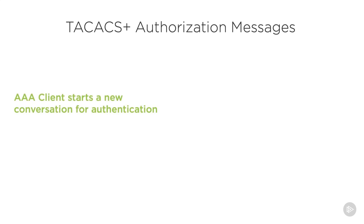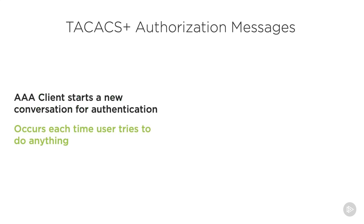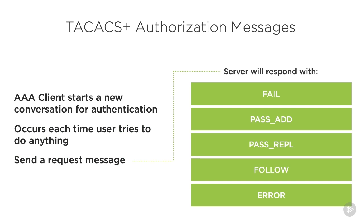Once authenticated, the AAA client starts a new conversation for authorization. This is useful because the AAA client can ask for authorization for everything the user is trying to do. For example, if TACACS+ is being used for administrators to administer a device, the AAA client can verify that the administrator has authorization for each command they issue. The server can respond with: fail (no authorization), pass add or pass reply (authorized with additional information), follow reply (redirect to a different AAA server), or error (an error during authorization).